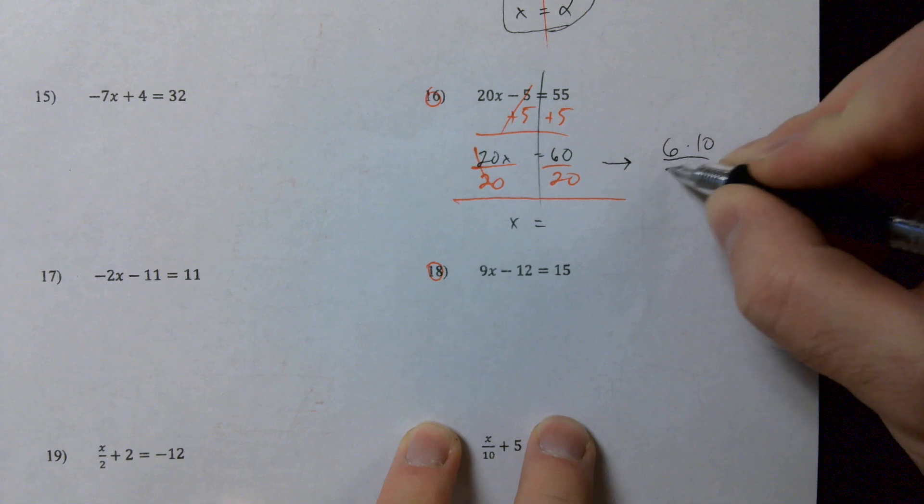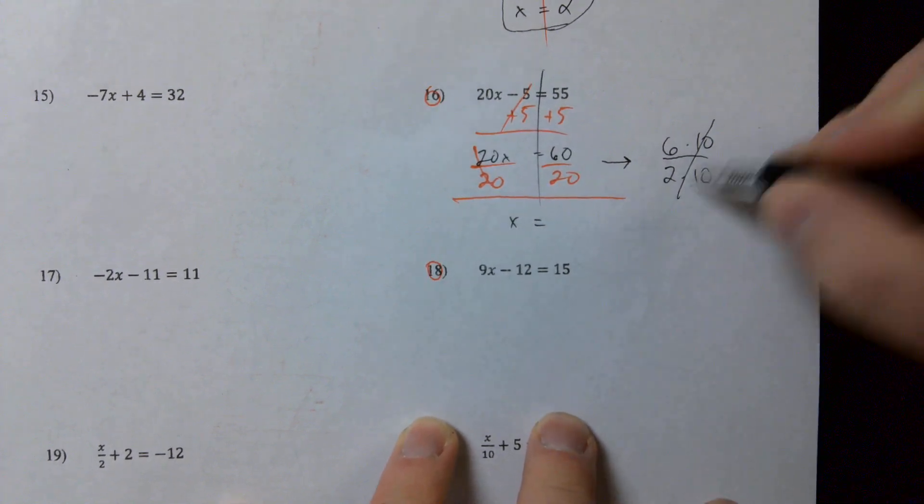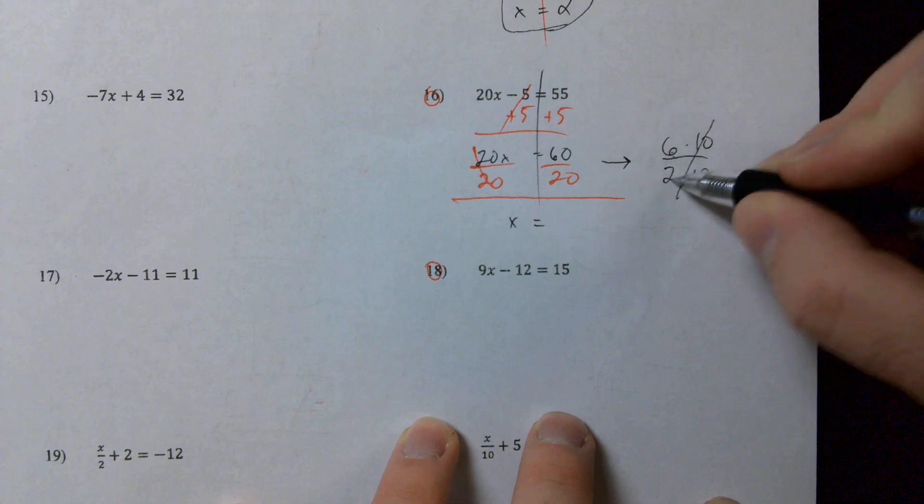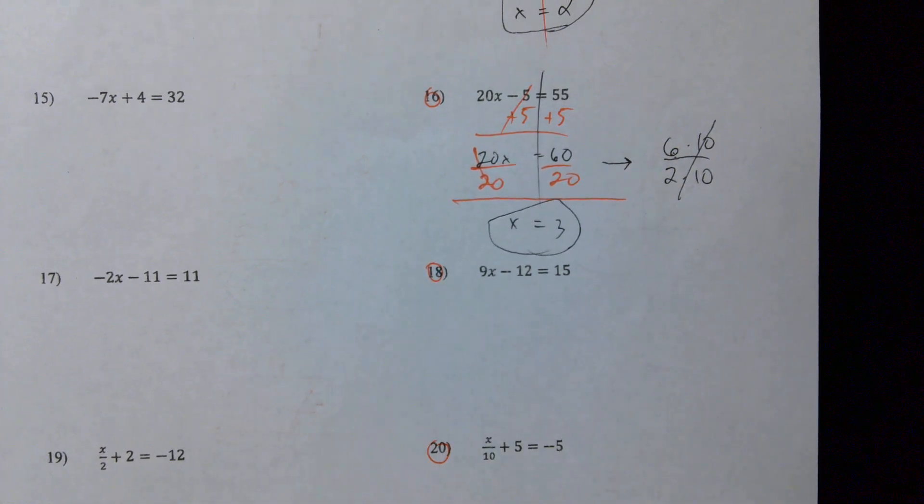Right, so I can cancel out the tens and six divided by two gives me three. So whenever we have a multiple of ten over a multiple of ten, probably our zeros cancel each other out when we just look at those numbers in front.